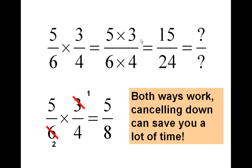Both ways work. You can just multiply across the top, multiply across the bottom, and cancel down after. But if you can get the hang of cancelling, it does save you a lot of time.